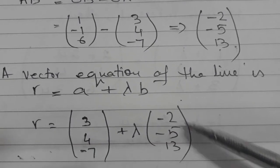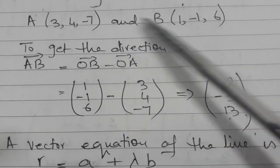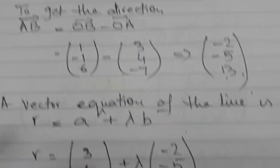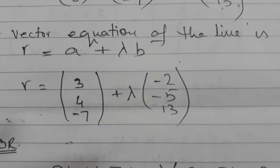So in place of b, you will write this direction. Here we have written. And in place of a, you can write any point out of these two. I have taken the first one. So this is my vector equation of the line.